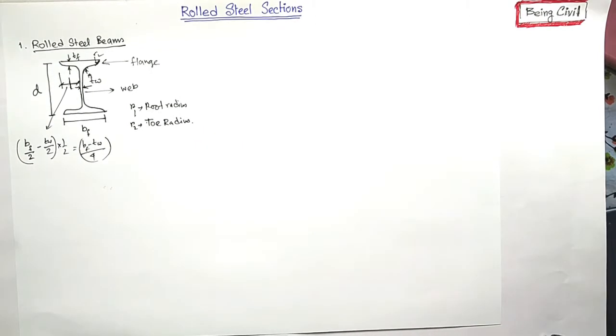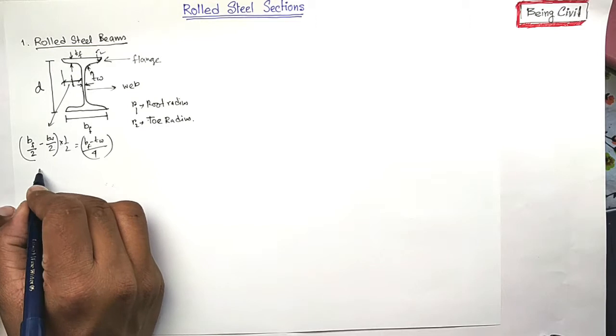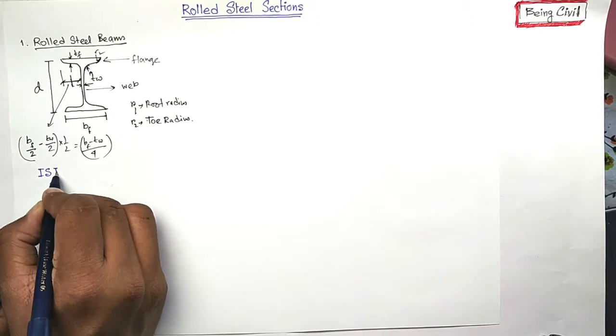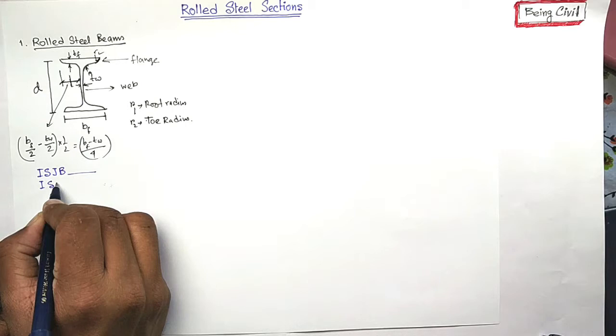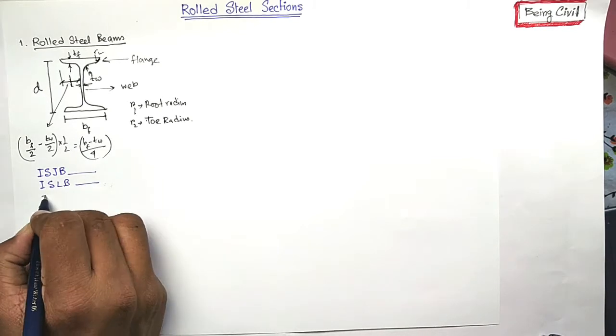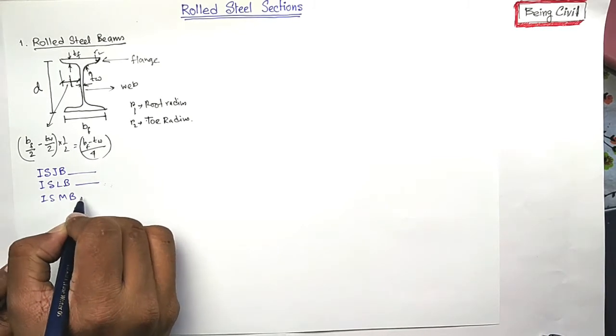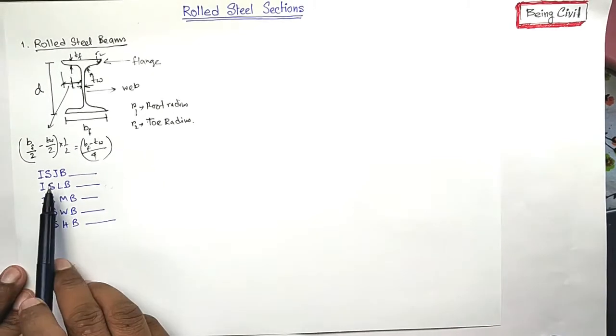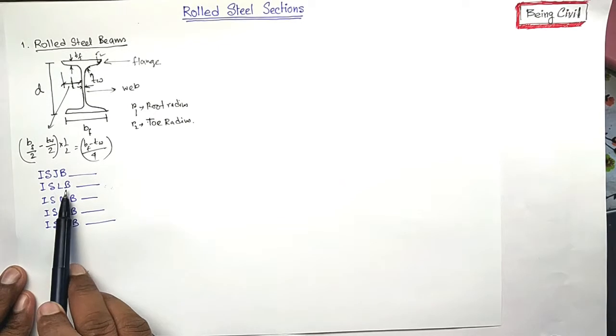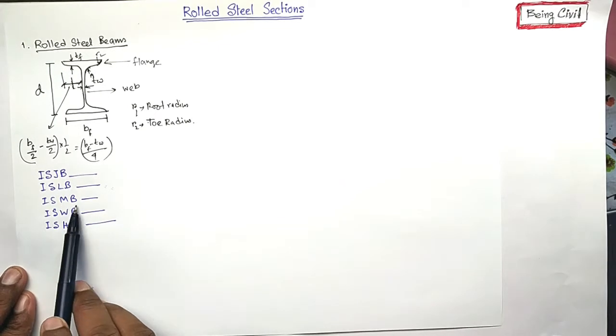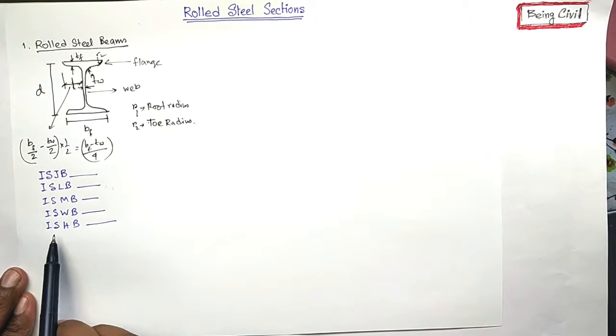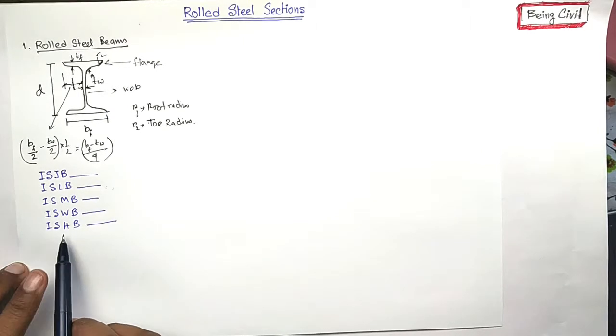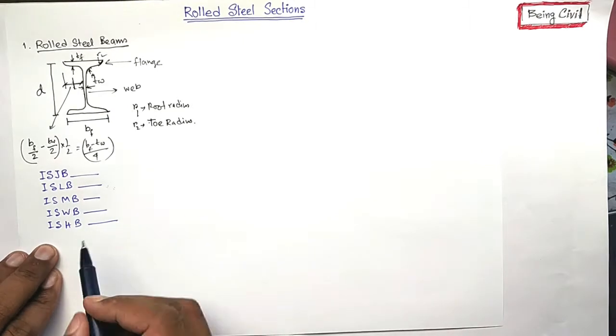And this type of steel beams are designated with different names like ISJB with depth, ISLB depth, ISMB depth. This is Indian standard junior beams, Indian standard light-weight beams, Indian standard medium-weight beams, Indian standard wide flange beams and Indian standard heavy-weight beams.